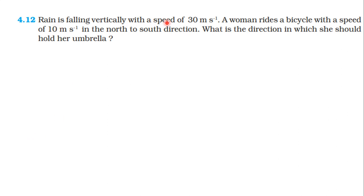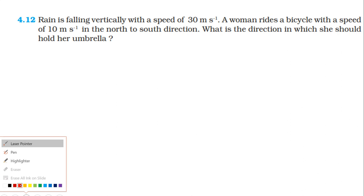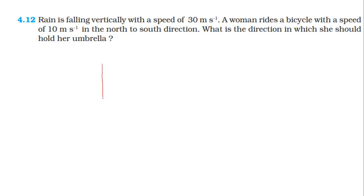Next question: Rain is falling vertically with a speed of 30 m per second. A woman rides a bicycle with a speed of 10 m per second in the north to south direction. In what direction should she hold her umbrella? Let's solve it. Rain is falling vertically downward. The woman rides at 10 m per second in the north to south direction.